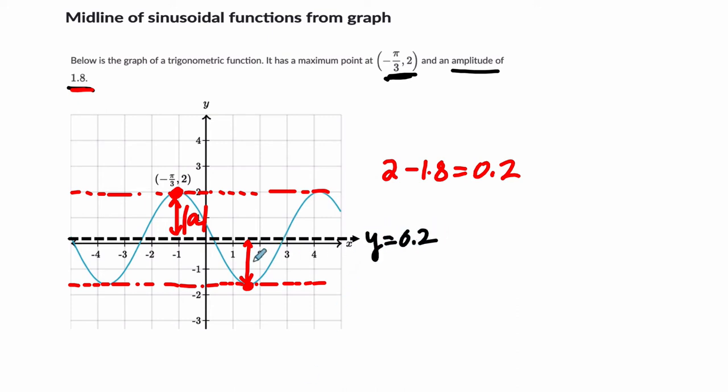And if you have to find the minimum point here, you take another 1.8 away from 0.2. And that brings you to negative 1.6. 0.2 minus 1.8 is negative 1.6. That's what these questions are like.